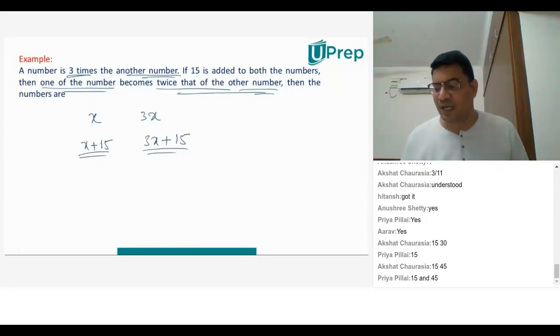That means this number, 3X plus 15, will be equal to twice of your X plus 15. So your answer will be very simple. You have 3X plus 15 equals...